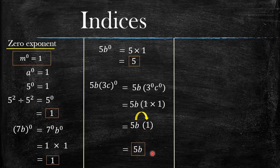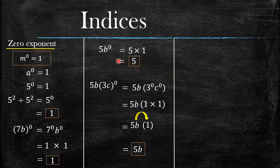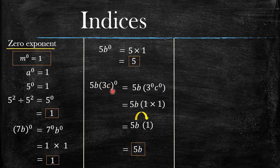We then multiply 5b by that one, which in the end gives us 5b as our final answer. That's why these two questions are actually the same — the five b was not raised to anything and became our answer, while everything raised to the power zero became one.